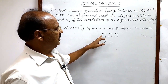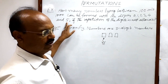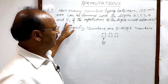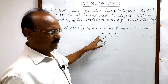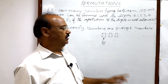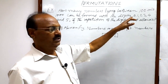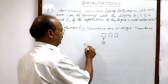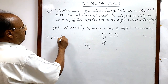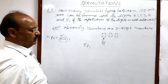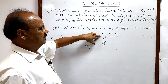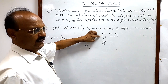So the hundreds place can be filled in 5 ways, because we have 6 digits altogether — 0, 1, 2, 3, 4, and 5 — but 0 will not be taken for the hundreds place. So the remaining digits are 5 only. We have to select 1 digit out of these 5 digits, which can be done in 5P1 ways. We use the formula: nPr = n! / (n−r)!, so 5P1 = 5! / 4!.